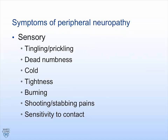So what do we do in the clinic when we see someone with neuropathy? You might think of it as pain, but peripheral neuropathy can cause many different symptoms. They can be sensory: tingling or prickling sensation, dead numbness — some people describe it as something wrapped around the foot or walking on sponges — a cold feeling, a tightness or constricting sensation around the foot, burning like a sunburn, shooting or stabbing pain like an electrical shock or knife-like pain, and sensitivity to contact — you shy away from the touch of your partner or don't want sheets rubbing against your feet.